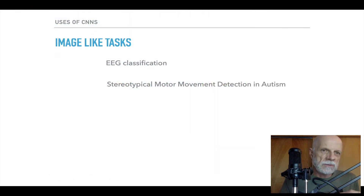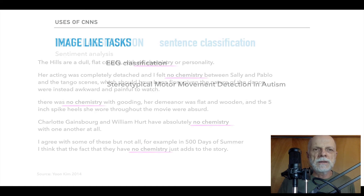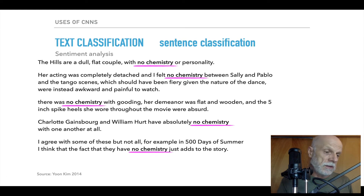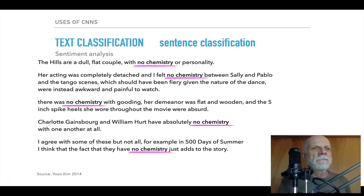CNNs are also used for image-like tasks beyond image recognition — such as EEG classification. There's interesting work on stereotypical motor movement detection in autism. Anything you can shoehorn into something like an image, CNNs would be good at. Even in text classification, they're pretty much state of the art. A phrase like 'no chemistry,' regardless of where it occurs in a sentence, similarly to regardless of where eyes are in a picture, means the same thing when you're doing sentiment analysis.